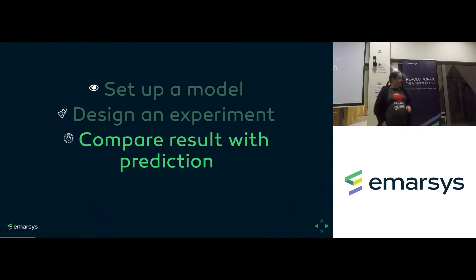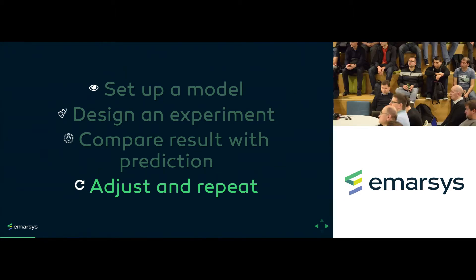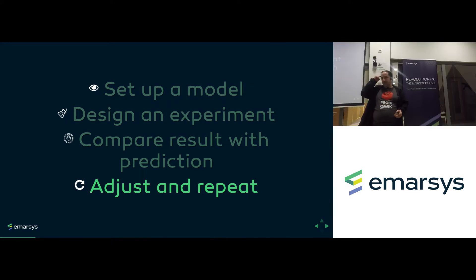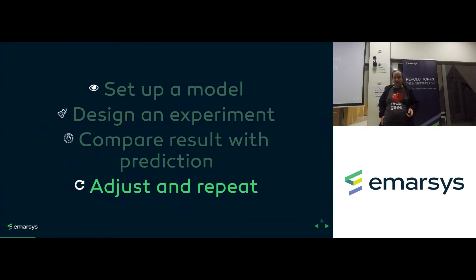When there is a result that doesn't fit our model, we adjust the model — we change it, sometimes even create a completely new one. Relativity, when specialized, is actually similar to Newtonian physics in the context where Newtonian physics works. The point is we want to adjust and repeat — that's the scientific method.